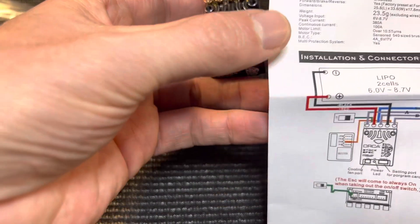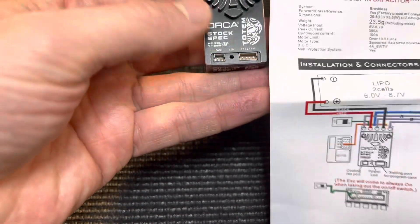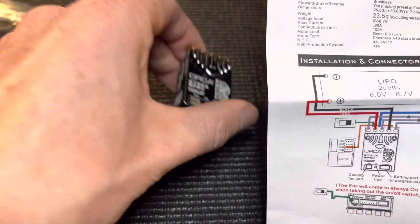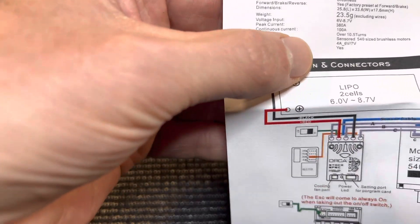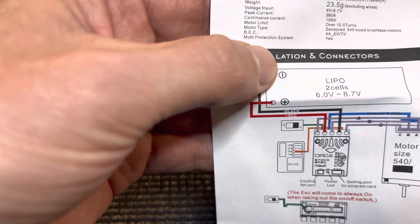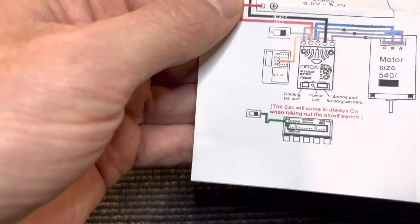Motor limit 10 and a half, I don't know, it's up to you if you want to push it all the way up to 10 and a half, but I'd probably stop at a 13.5 myself. BEC 4 amp, says 4 amp 6 volt 7 volt. Multi protection yes, I guess that's the reverse polarity protection.